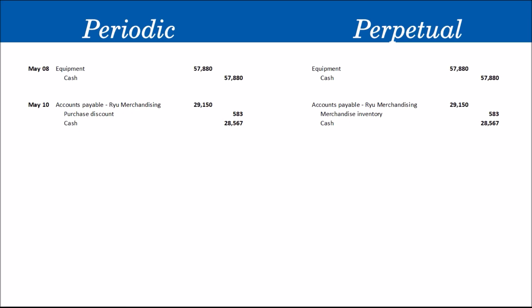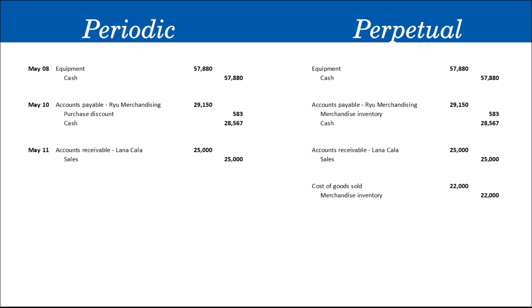For May 11, merchandise was sold on account to Lanakala for 25,000. Under both systems, we debit Accounts Receivable — Lanakala for 25,000 and credit Sales for 25,000. Under the perpetual inventory system, we also record the inventory leaving the warehouse: debit Cost of Goods Sold for 22,000 and credit Merchandise Inventory for 22,000.